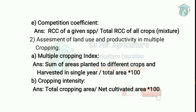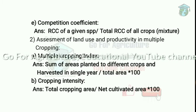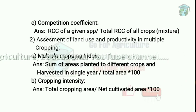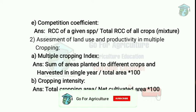Next is multiple cropping assessment. The Multiple Cropping Index equals the sum of areas planted to different crops and harvested in a single year, divided by total area, multiplied by 100. This was proposed by Diermeier and is used to measure the sum of cropped areas in a single year divided by total crop area into 100. Next is Cropping Intensity.